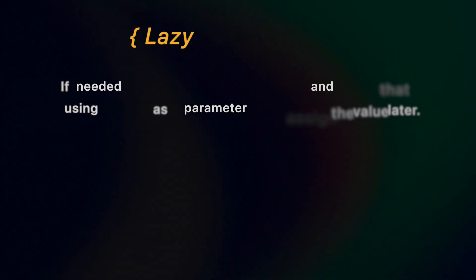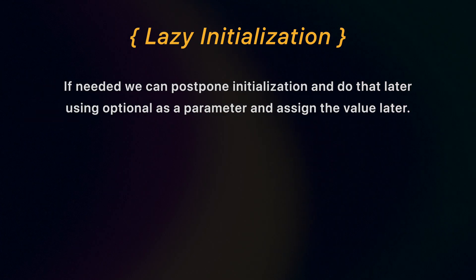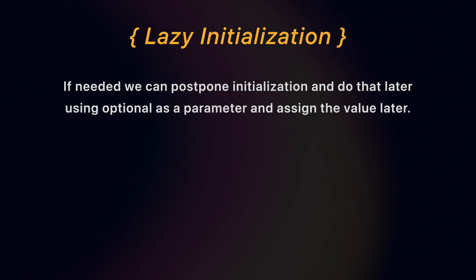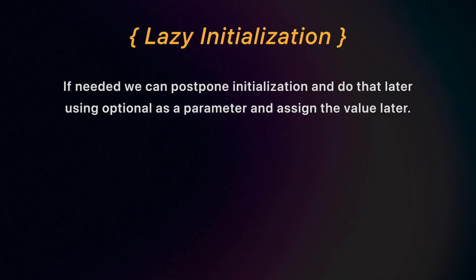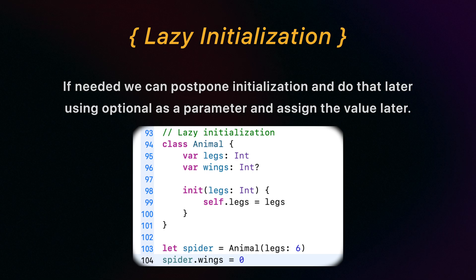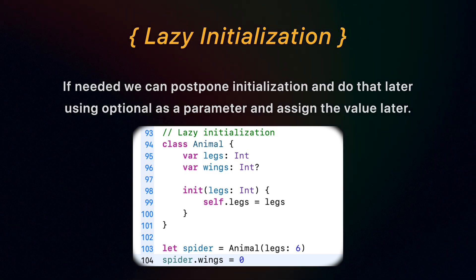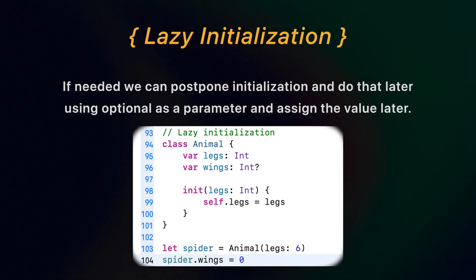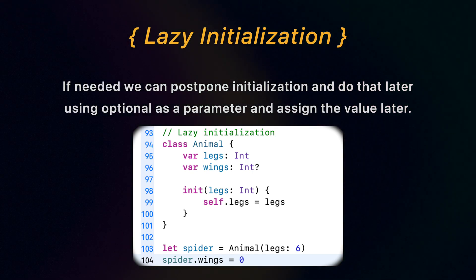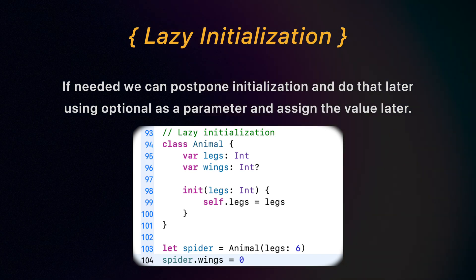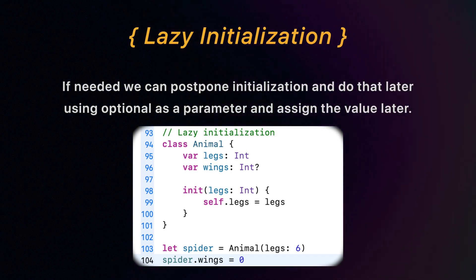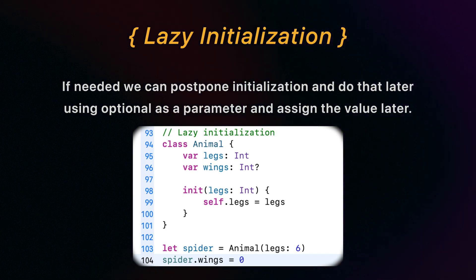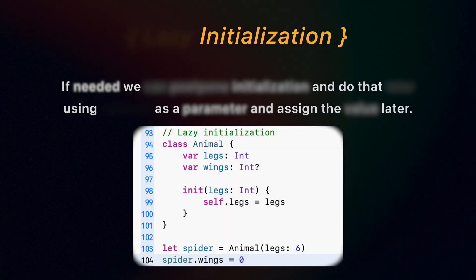The last one is lazy initialization. If needed, we can postpone initialization and do that later using an optional as a parameter and assign the value later. It could be convenient if we don't yet have a value to assign in the initializer.